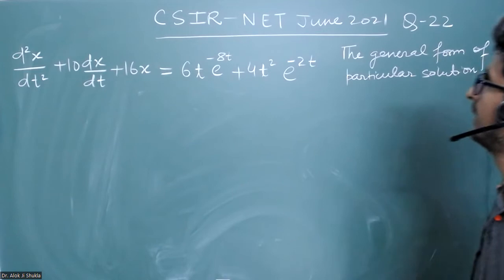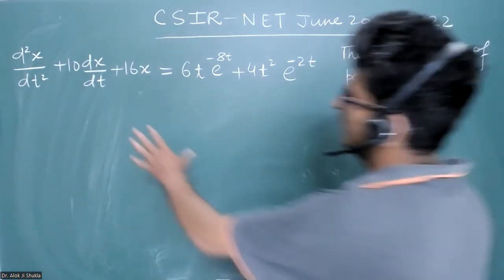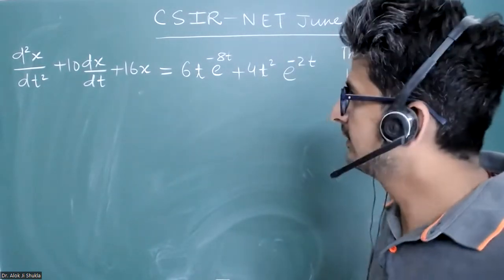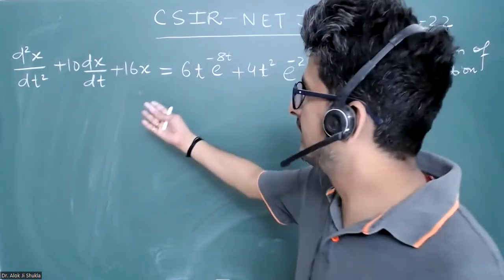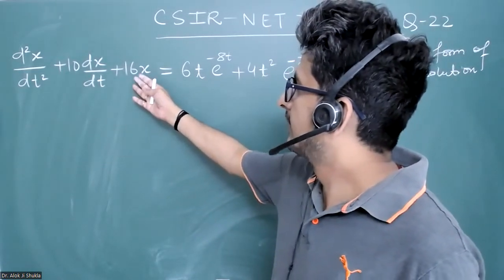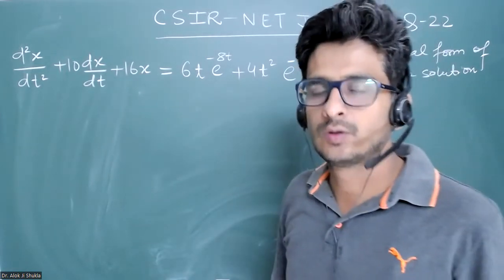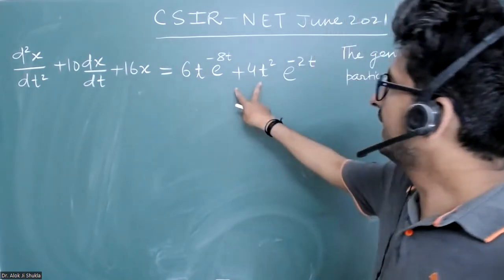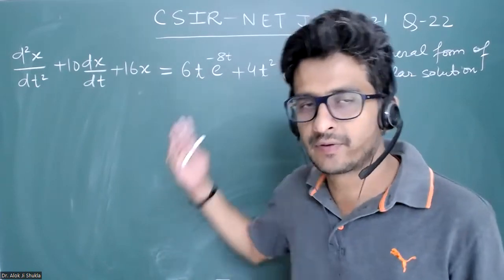This is a question from CSIR NET June 2021, in which a one-dimensional harmonic oscillator is given. You can see it is d²x/dt² plus 2γ(dx/dt) plus some constant k times x. This is a harmonic oscillator equation and the right-hand side is capital F(t), that is external force and it is a function of time.